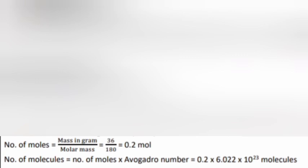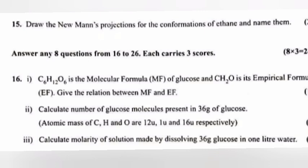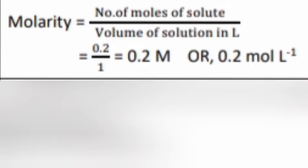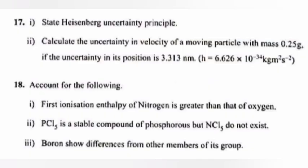Part 3: Calculate molarity of solution made by dissolving 36 grams glucose in one liter water. Answer: Molarity = number of moles of solute / volume of solution in liters = 0.2 / 1 = 0.2 mol/L.